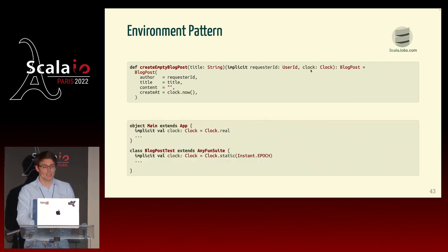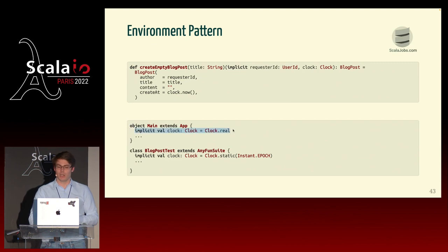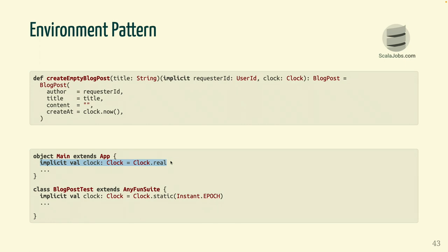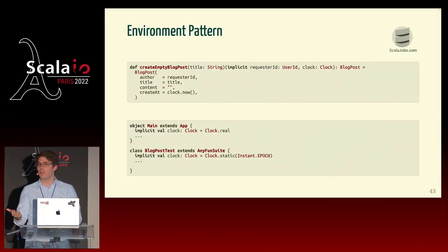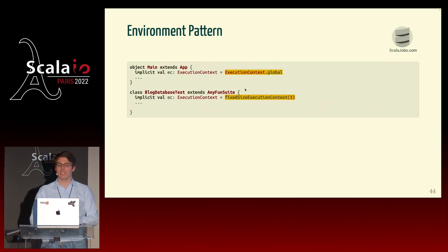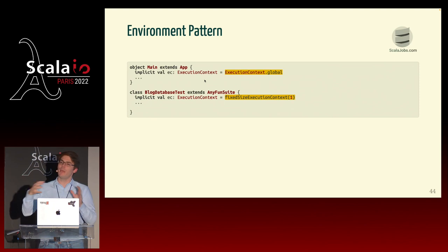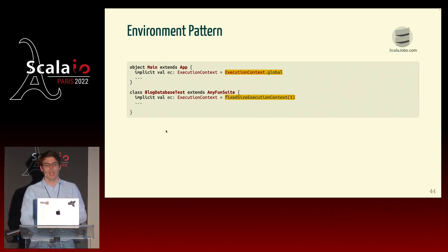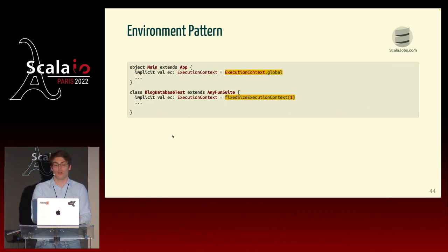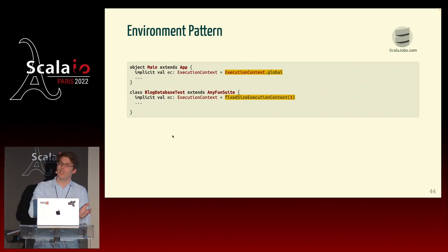In practice, in the main of our application we define an implicit clock as the real clock for production code. But within a test file we say we want to use this particular fixed time for our clock. If you've been using Scala futures, you're very familiar with this pattern — the ExecutionContext works exactly like that. You have a thread pool to execute actions, and in production you use a global or custom execution context, while in tests you might use one that only uses one or two threads. Essentially it's the same principle: two versions, one for test and one for production.